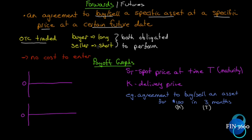A buyer has a long position; a seller has a short position. You need a buyer and a seller in every derivative contract — there has to be a long and a short. Critically, both parties are obligated to perform. When we look at options, that won't be true, but for forwards and futures both buyer and seller are obligated. There is no cost to enter a forward or futures agreement other than commissions and margin — but margin doesn't leave your account. No money trades hands when the contract is entered.